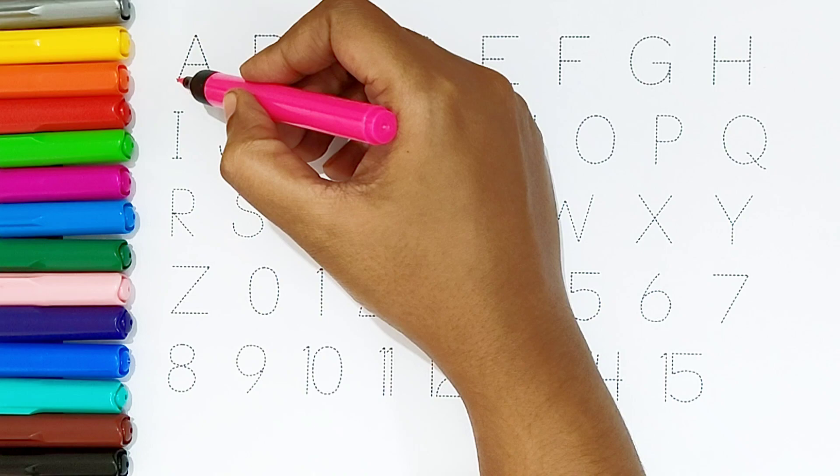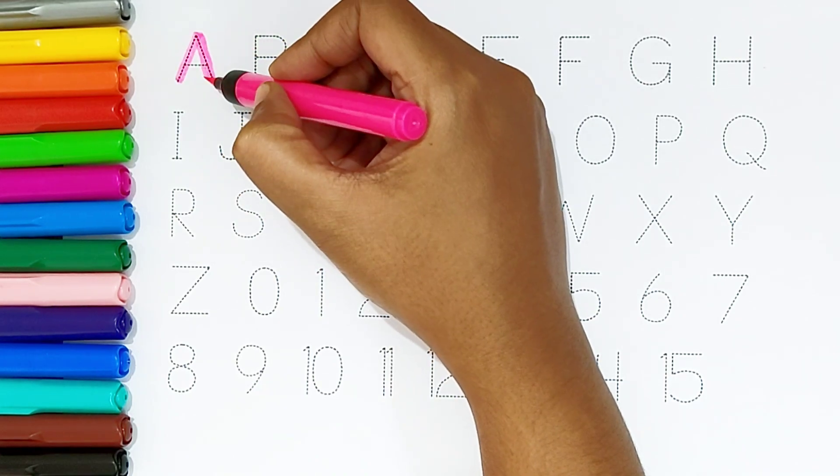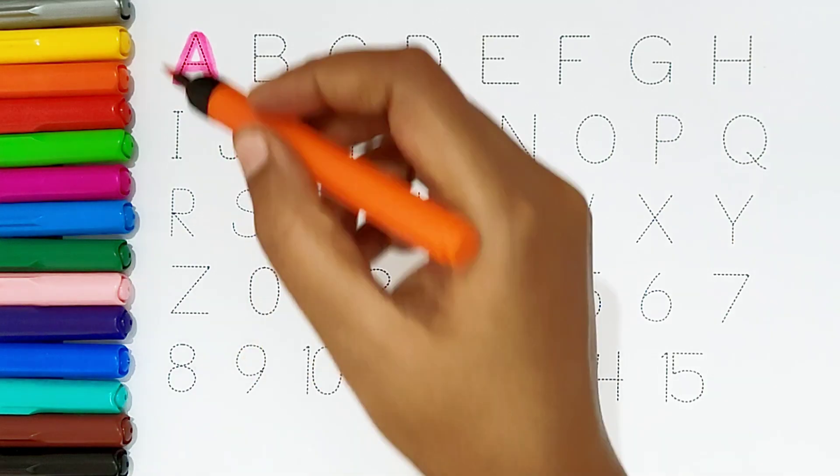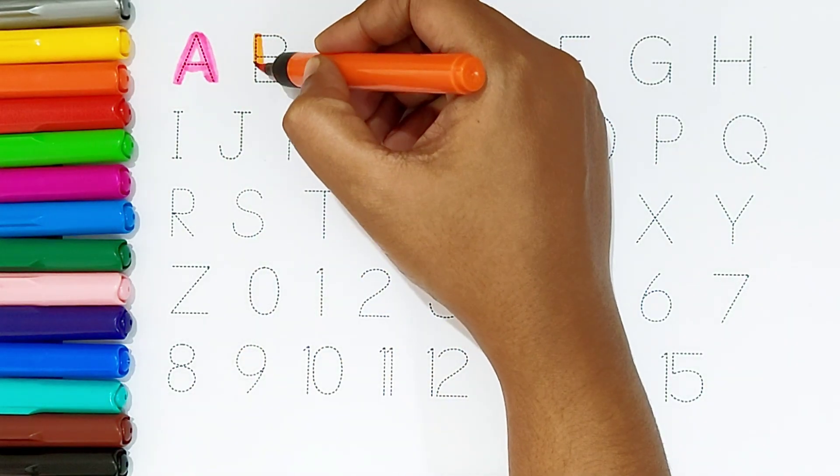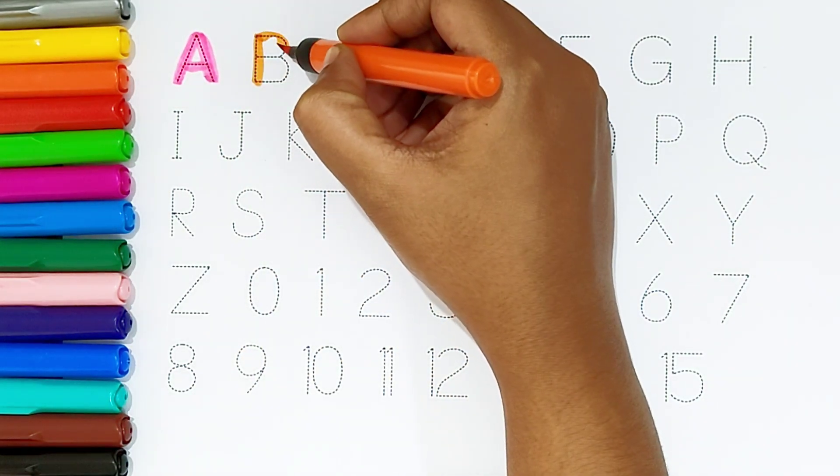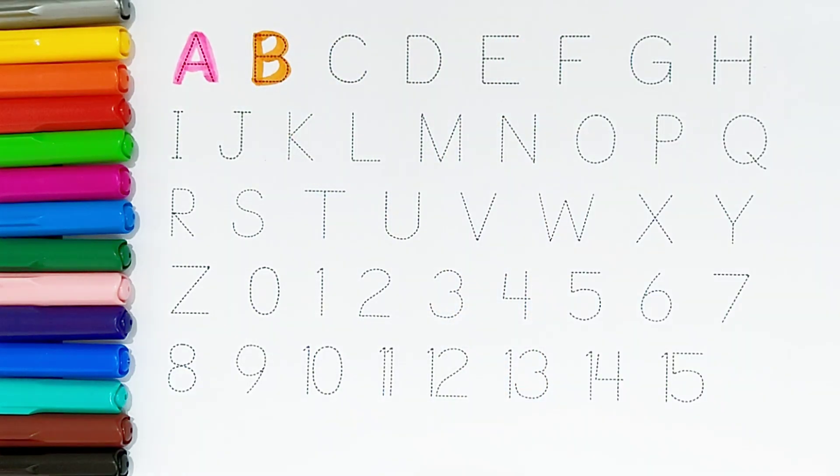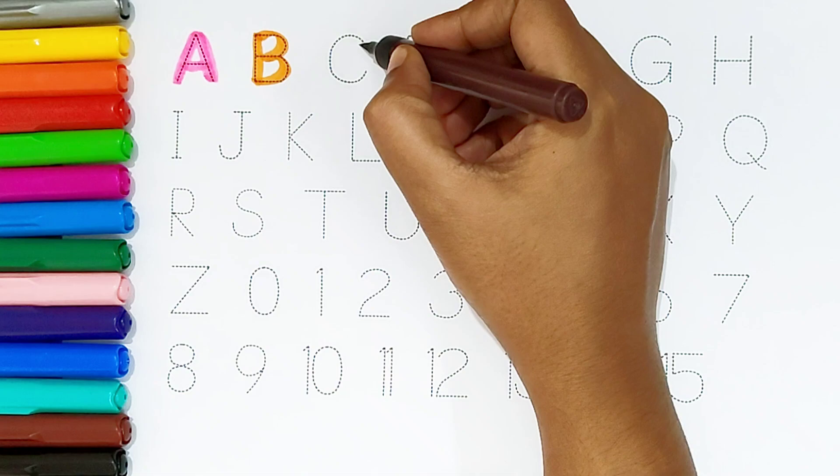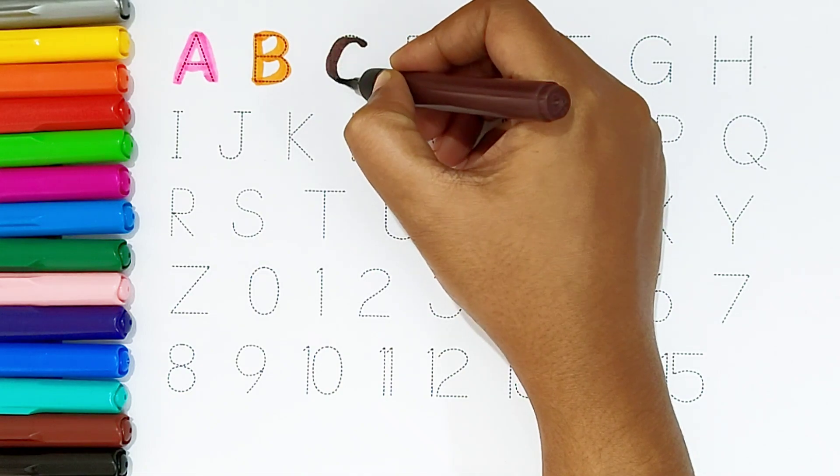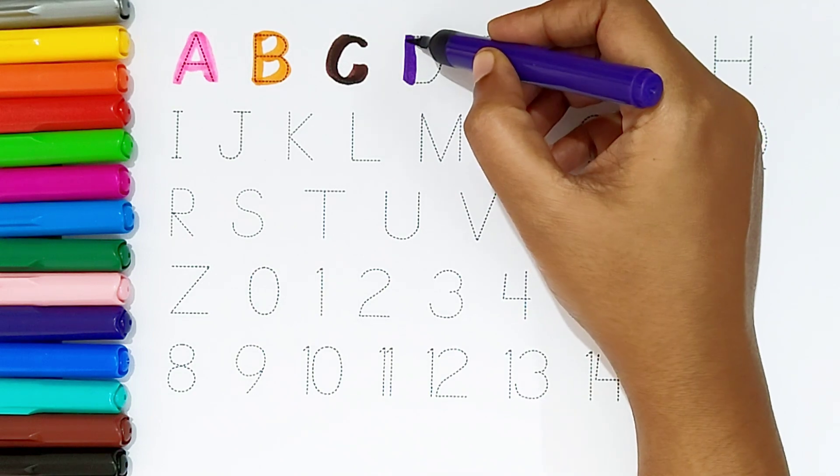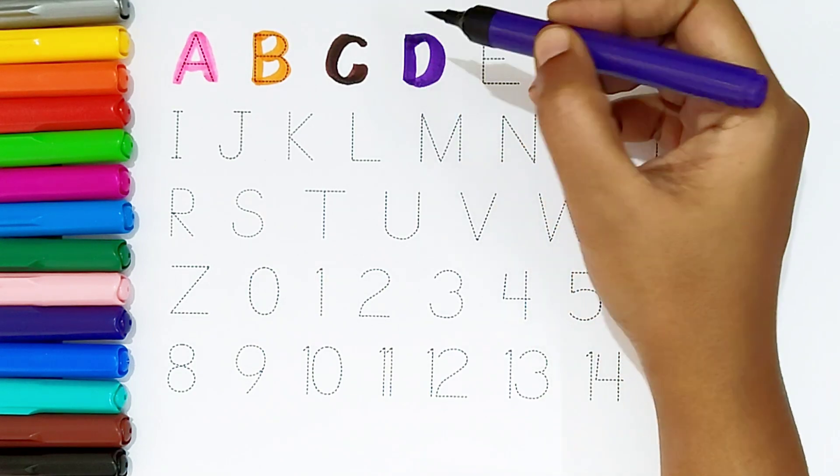A, light pink color. A is for aeroplane. B, orange color. B is for buffalo. C, brown color. C is for cat. D, violet color. D is for donkey.